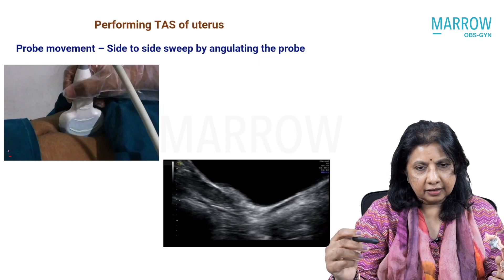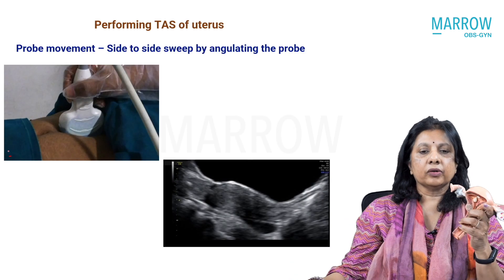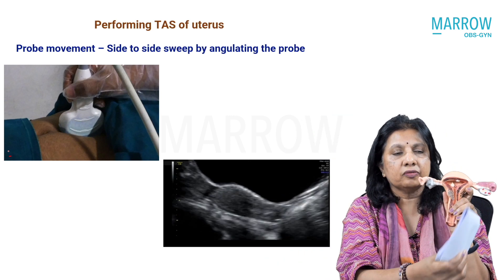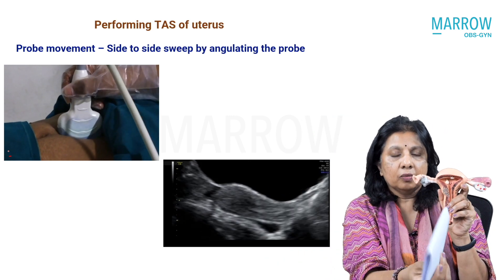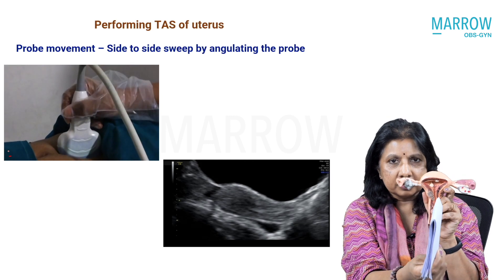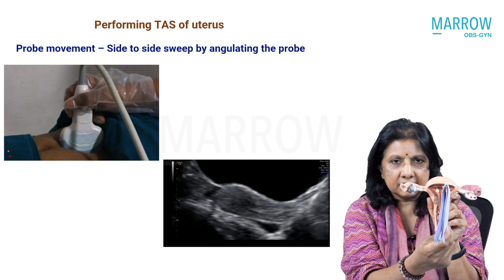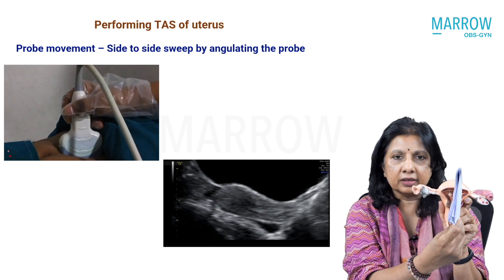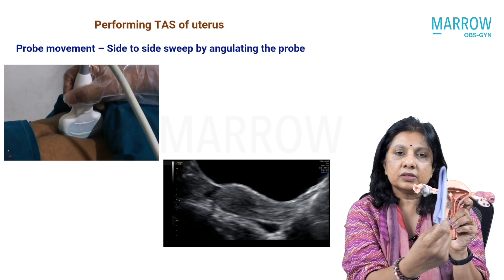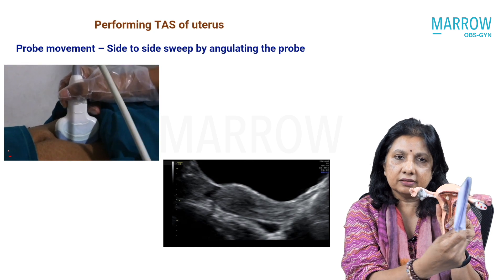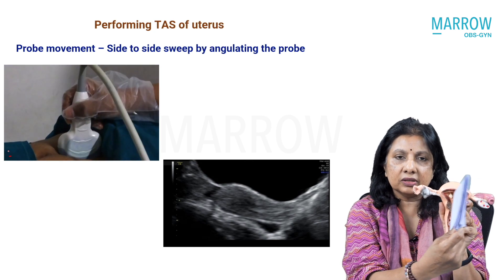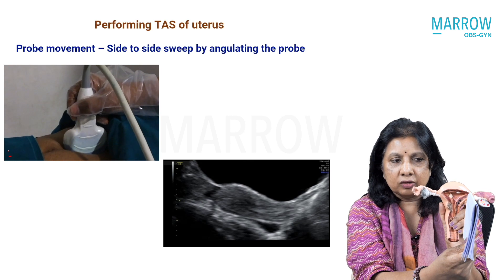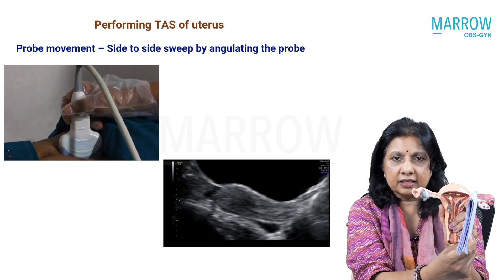As you can see in the clip, I am doing a side-to-side. When my probe is like this, if I were just staying stationary, I would only pick up the anterior-posterior slice of the mid uterus. But I need to see the margins — what is on either side of the midline of the uterus. So because of that, I do what is called a side-to-side movement.